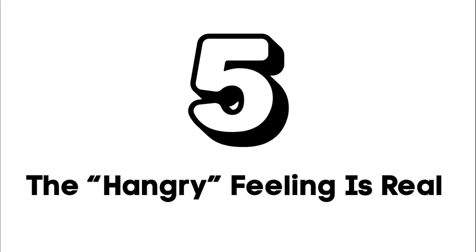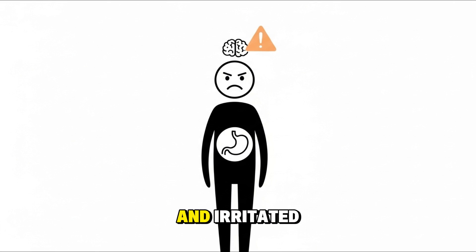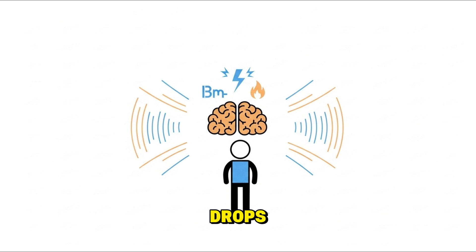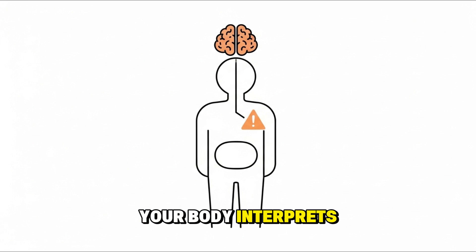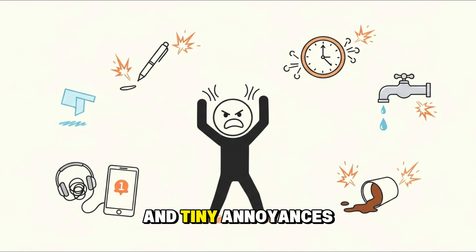Number five: The hangry feeling is real. When you're hungry and irritated, you're not just being dramatic. Your brain is actually in survival mode. As blood sugar drops, the brain releases cortisol and adrenaline, the same hormones used during fear or danger. Your body interprets hunger as a threat. That's why your patience disappears and tiny annoyances feel explosive.